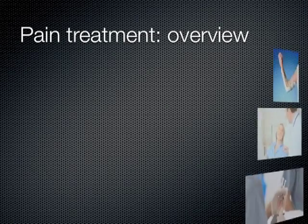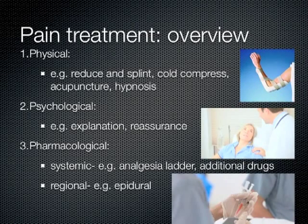There are three main components to treating pain. Physical treatment includes things like putting a splint on a broken bone, applying a cold compress, acupuncture, or hypnosis. There is also a psychological component — reassuring a patient that everything is going as planned, explaining why they're having pain or why they're taking a certain drug, can really affect a patient's pain perception. Pharmacological treatment involves the drugs prescribed for pain relief. The analgesia ladder is used frequently by anesthetists in combination with other systemically acting drugs. Another method is regional anesthesia, which only works on a certain area of the body — an example being an epidural, which can be used during and after surgery.